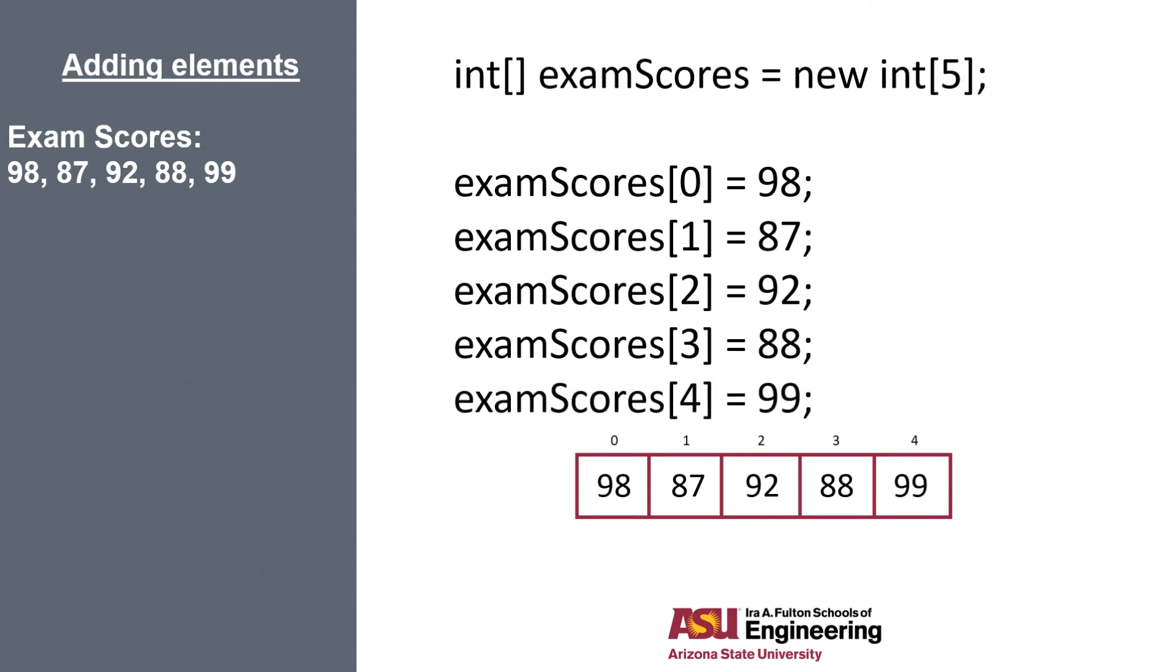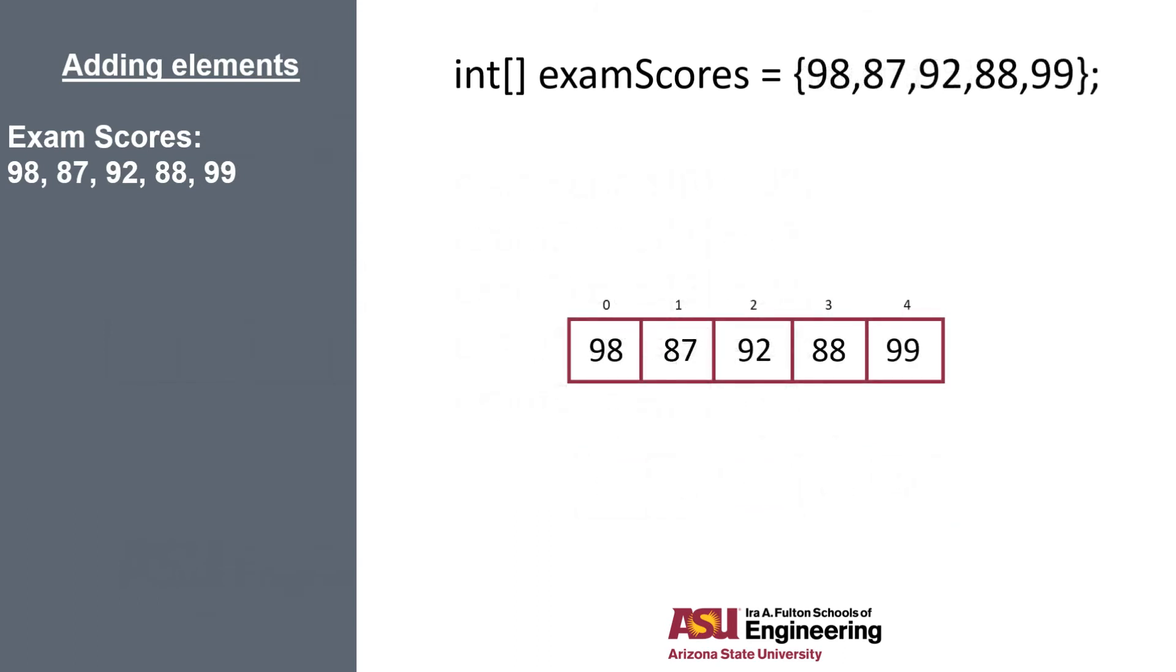So we don't have to do this in any specific order. However, you can change the value in your array at any location whenever you want. Or if you have the data already, you can add to your array during your instantiation as well. So creating the array using curly braces and a comma separated list initializes the array to be, in this case, of size 5, and it creates it with our scores already added.